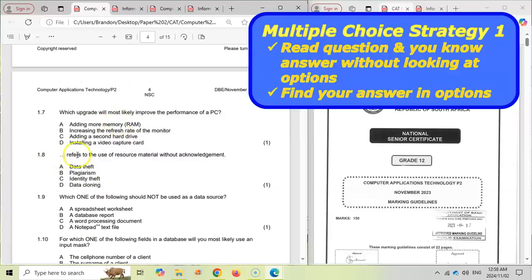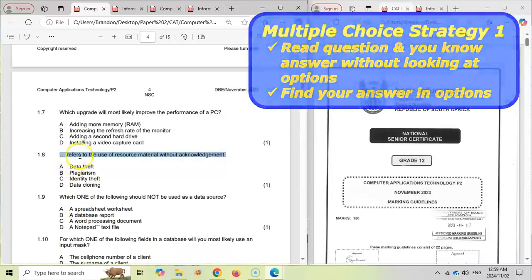The first strategy is when you read the question and then you know straight away what the answer is. So if I look for example at 1.8 this is a definite definition. So you're reading that question and you know exactly what the answer is and then you look for that answer in the list. That's how you approach those type of questions.